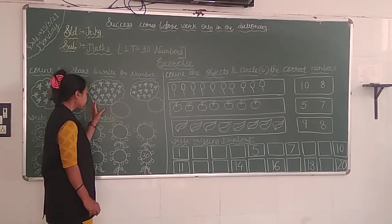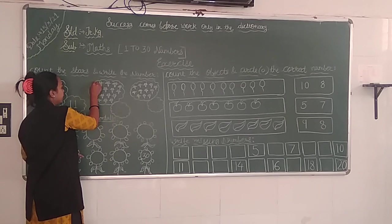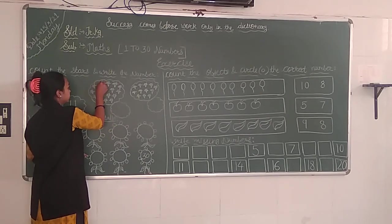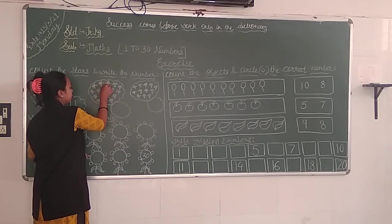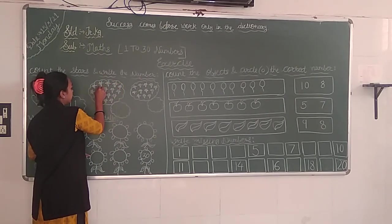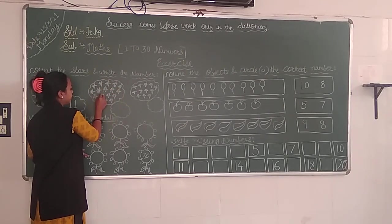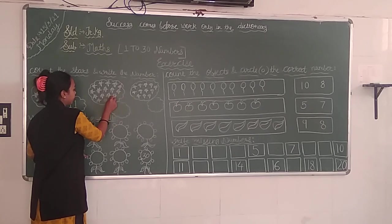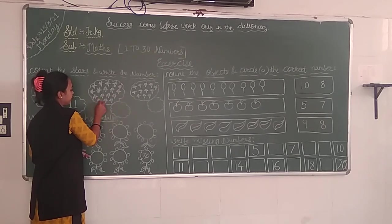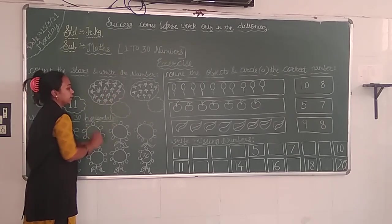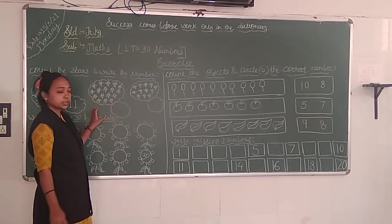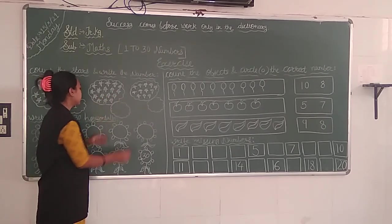Then we start counting here: 1, 2, 3, 4, 5, 6, 7, 8, 9, 10, 11, 12, 13, 14, 15, 16, 17. The next number starts at 17.